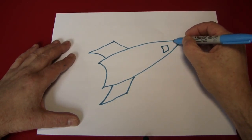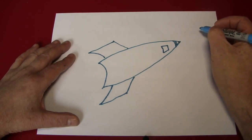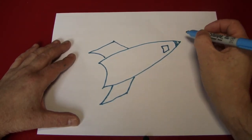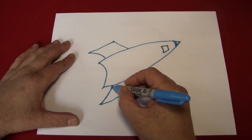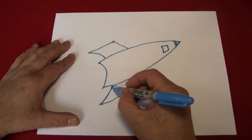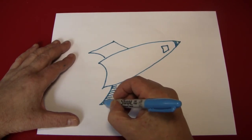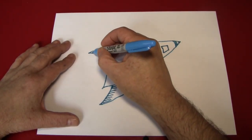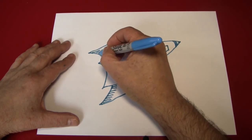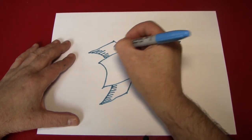Next, we can kind of color in the nose cone a little bit and put some little hash mark details right here on the rudders. I think that looks rather smart.